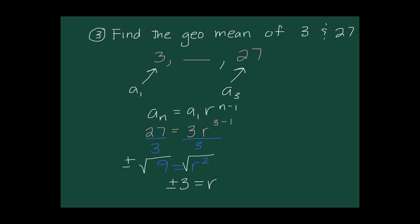We have two possible ratios: r equals 3 or r equals negative 3, so we need two different answers. If r equals 3, then 9 is our geometric mean. If r equals negative 3, then negative 9 is our geometric mean. To get full credit, I would need to provide both solutions.